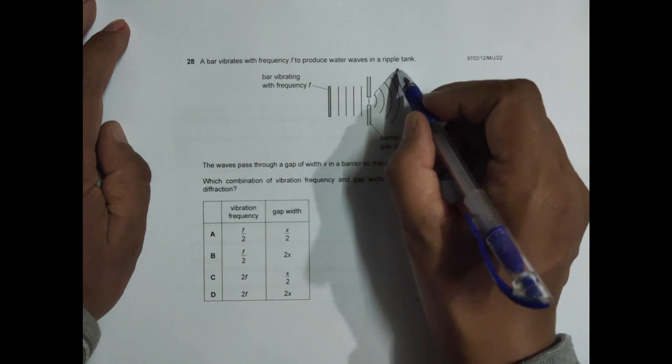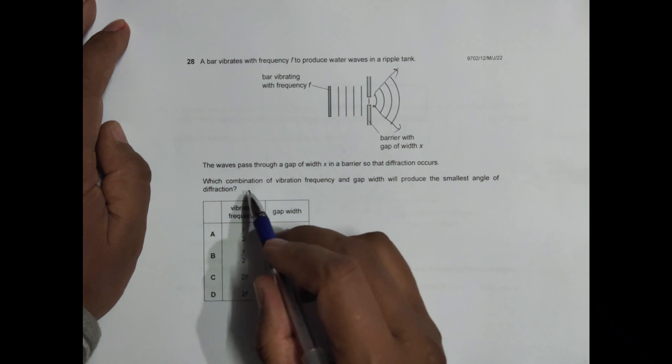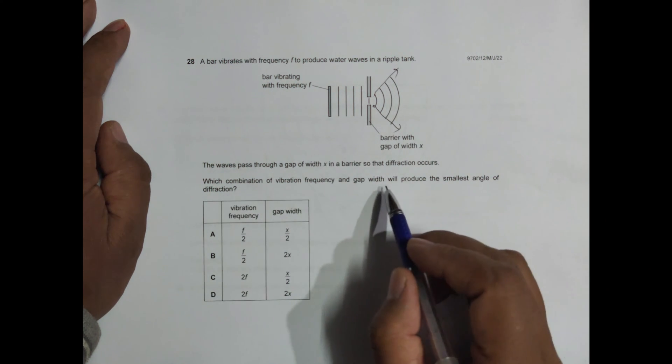So we have diffraction. Which combination of vibration frequency and gap width will produce the smallest angle of diffraction?